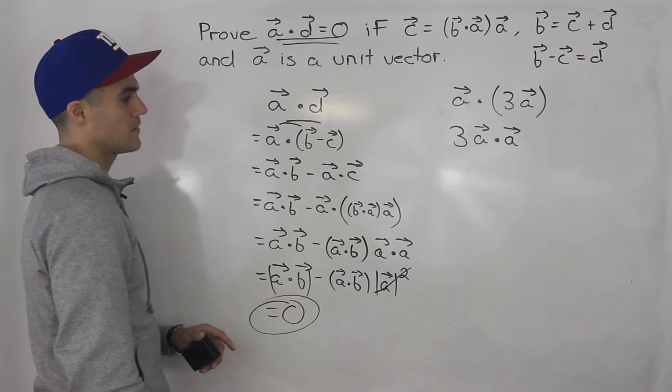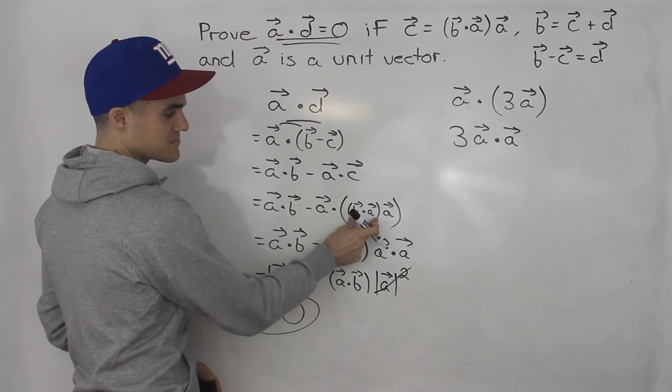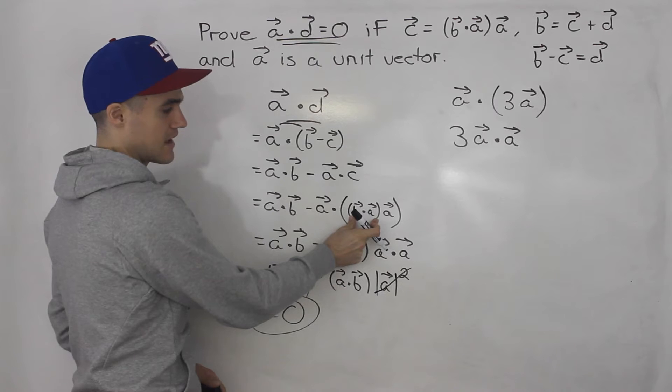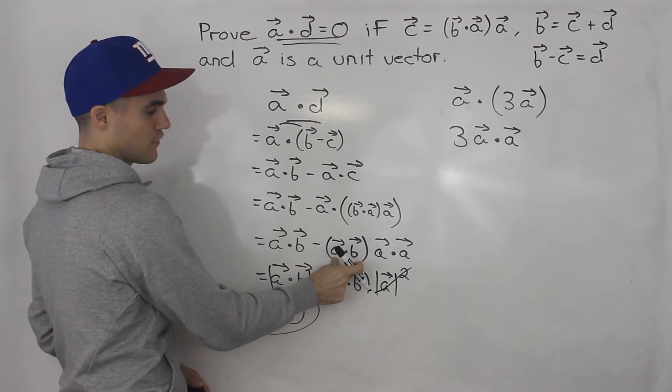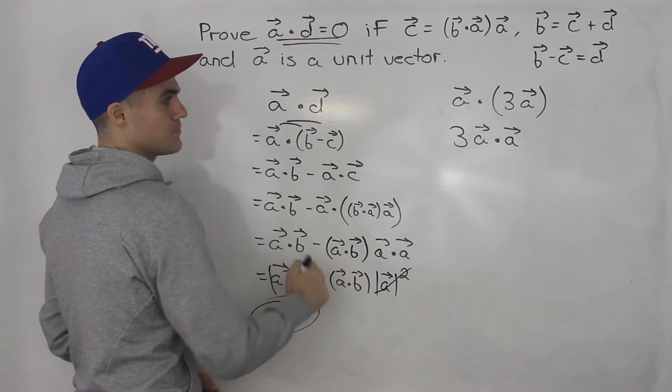So fairly tough proof, in my opinion, because there's a lot of substitutions going on. And what's tough is realizing that this bracket here, b dot a, is a scalar, and that you could put it in front. And then not only that, you could switch up the a and b vector.